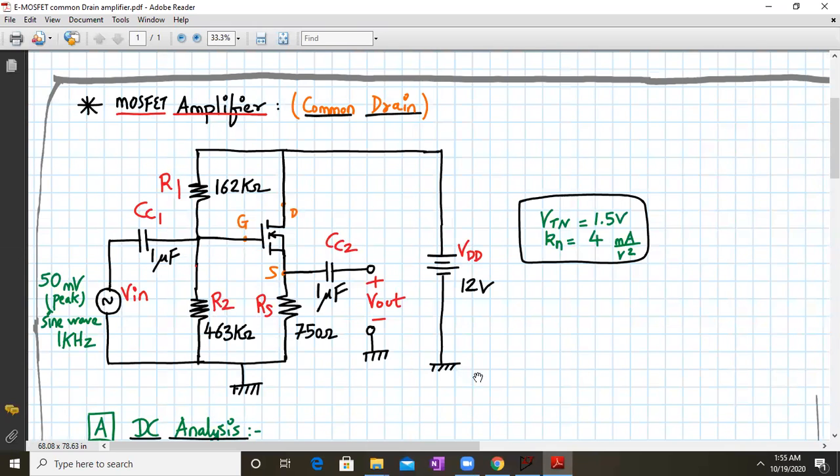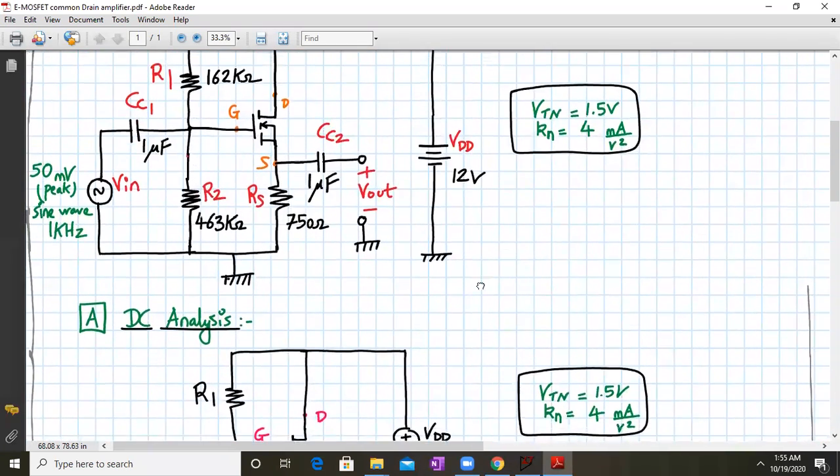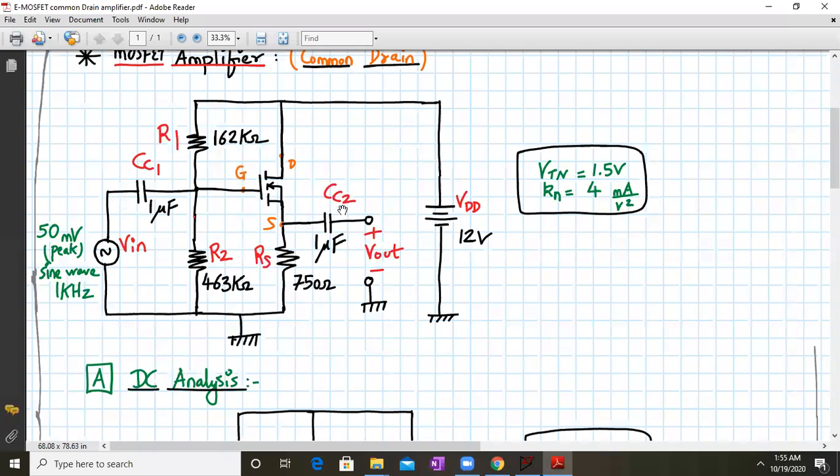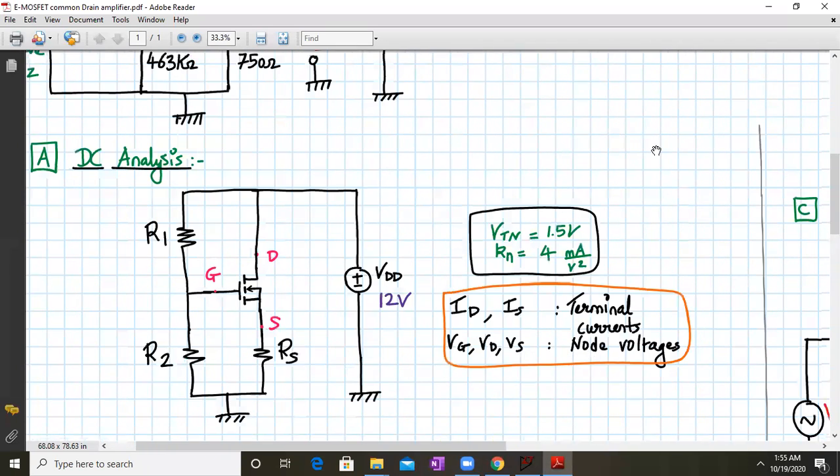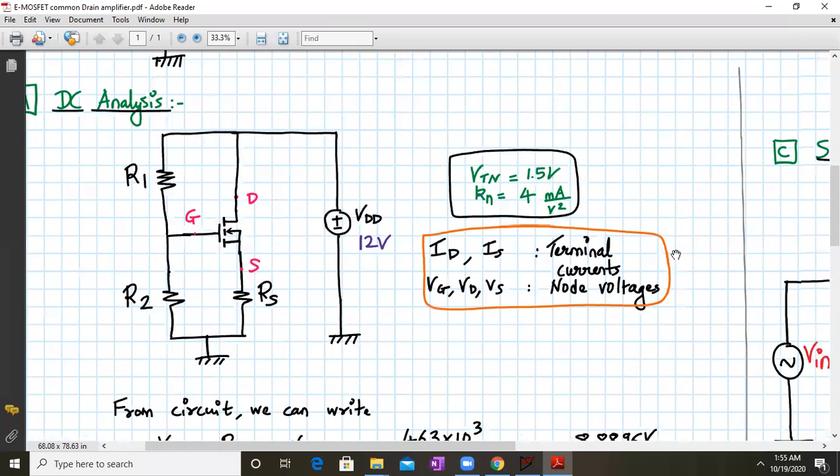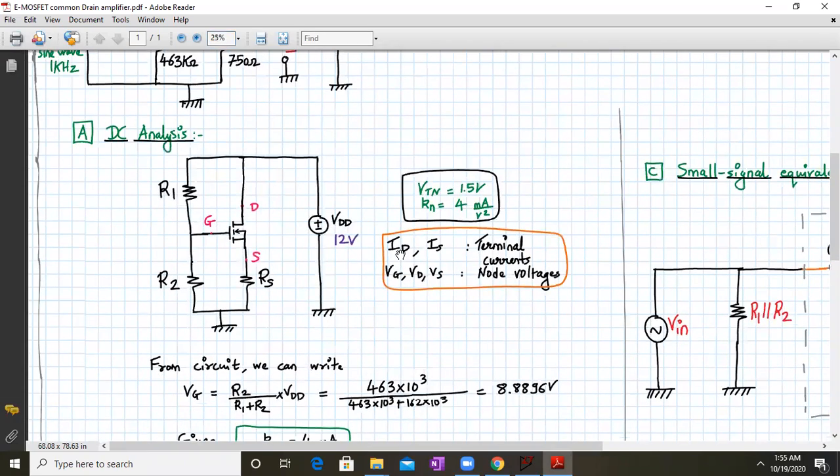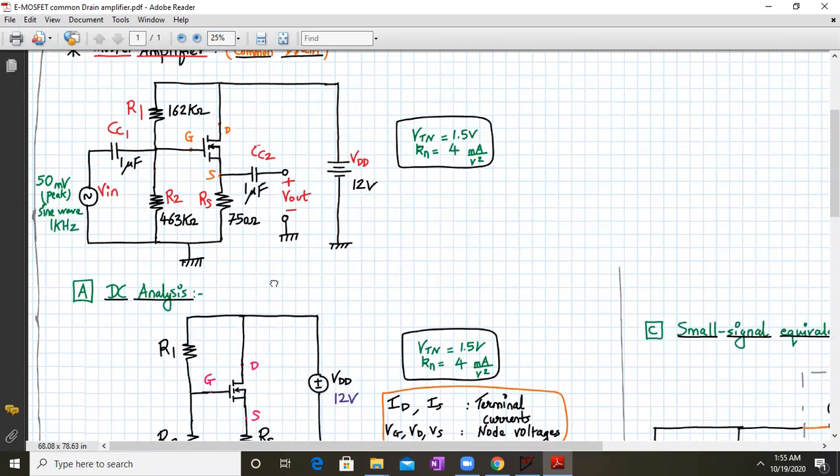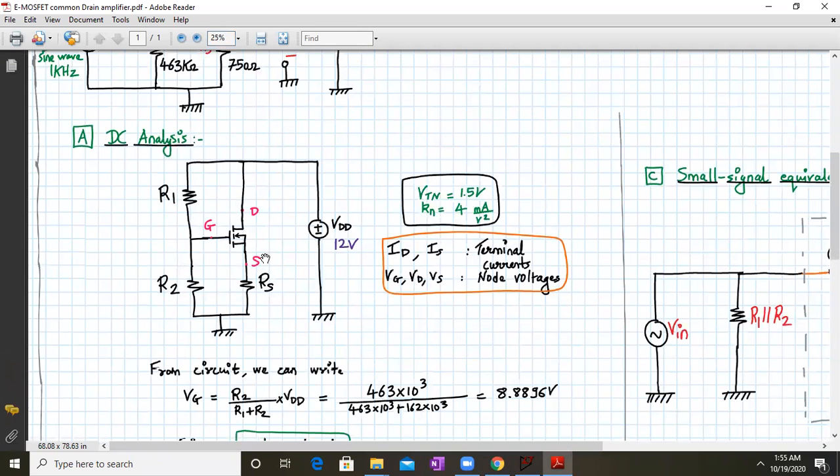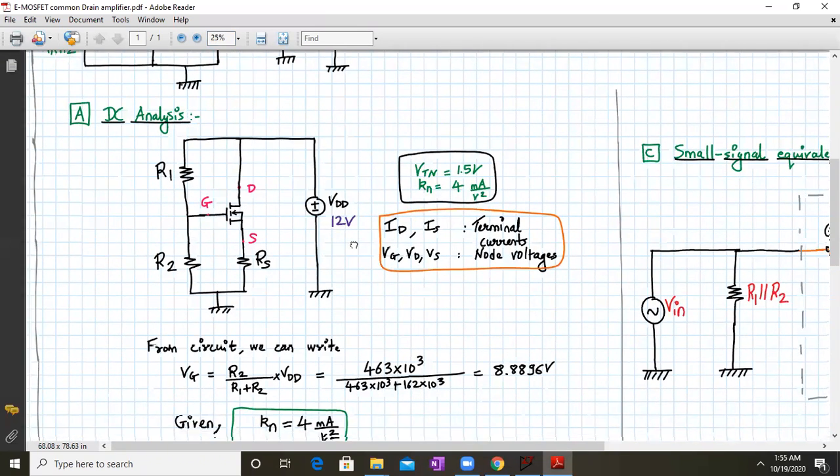For DC analysis, all capacitors behave as open circuits. The circuit simplifies - the capacitors disappear and we're left with the DC biasing network. From this circuit we need to determine the operating point.